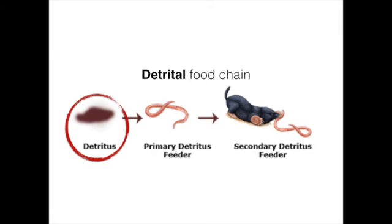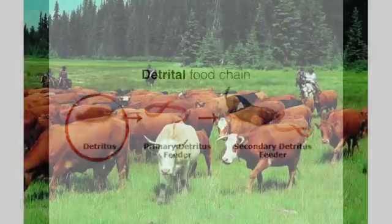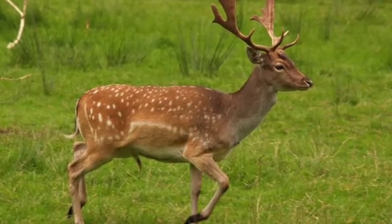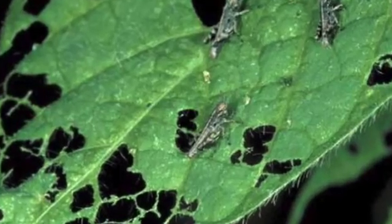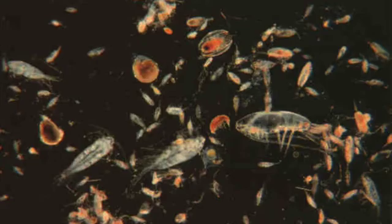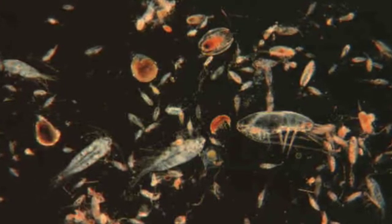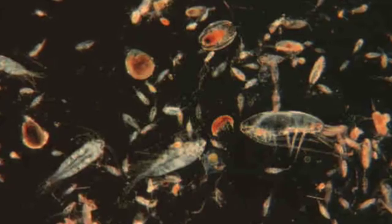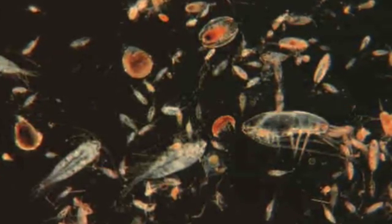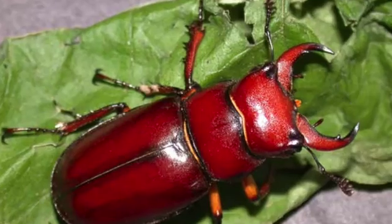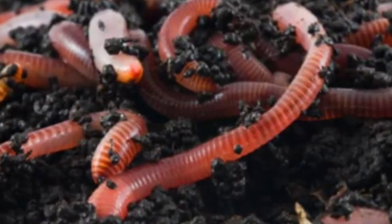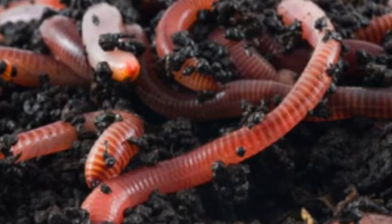In turn, the herbivores in each food chain are the source of energy for carnivores and so on. Cattle grazing on pasture land, deer browsing in the forest, insects feeding on leaves in the forest canopy, or zooplankton feeding on phytoplankton in the water column all represent first-level consumers of the grazing food chain. In contrast, a variety of invertebrates such as snails, beetles, millipedes, and earthworms, as well as fungi and bacteria, represent the first level of the detrital food chain.